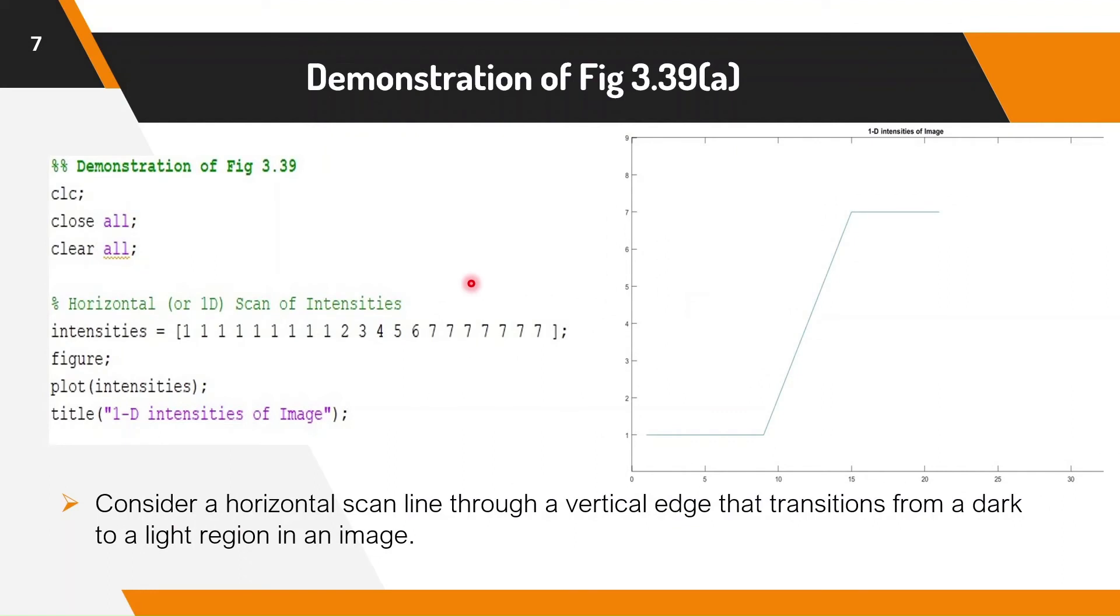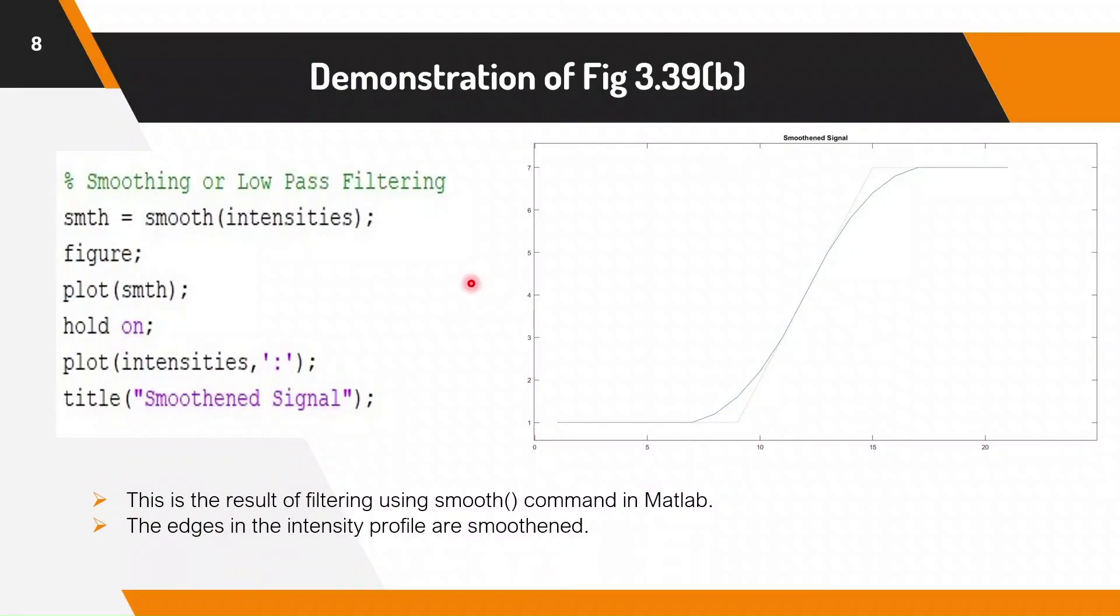Let us consider a horizontal scan through the vertical edge that transitions from a dark to a light region in an image. Now we use smooth command in MATLAB to smoothen the edges in the intensity profile. Internally, smooth in MATLAB uses a moving average filter.